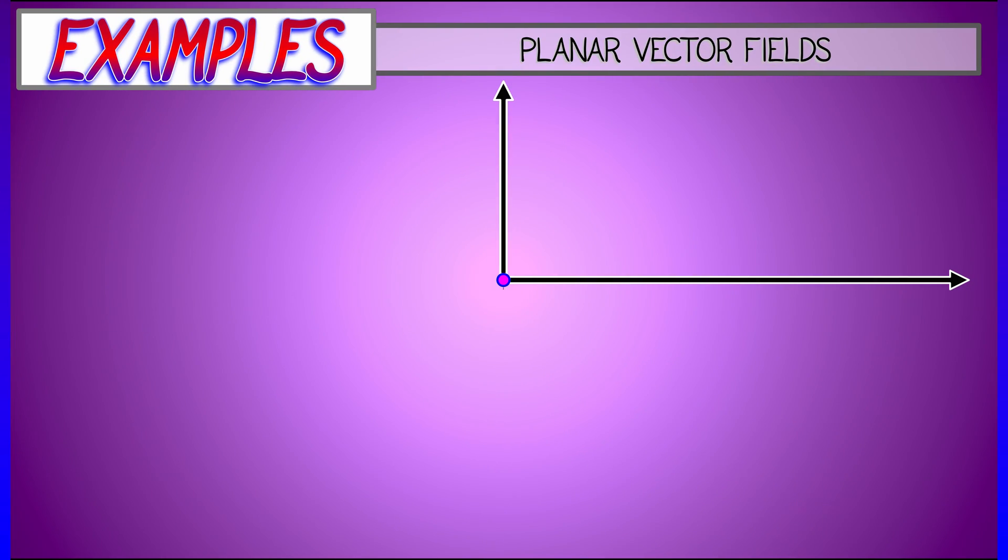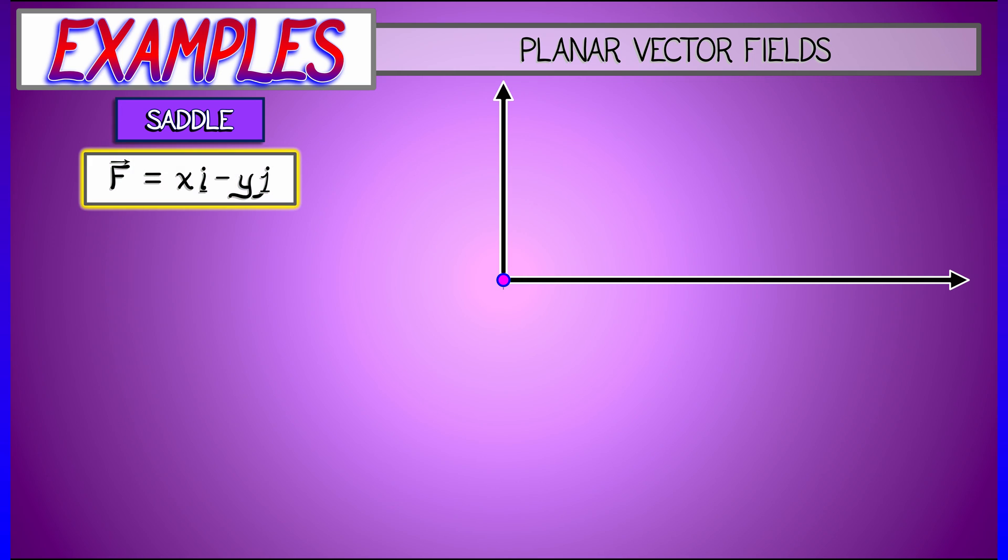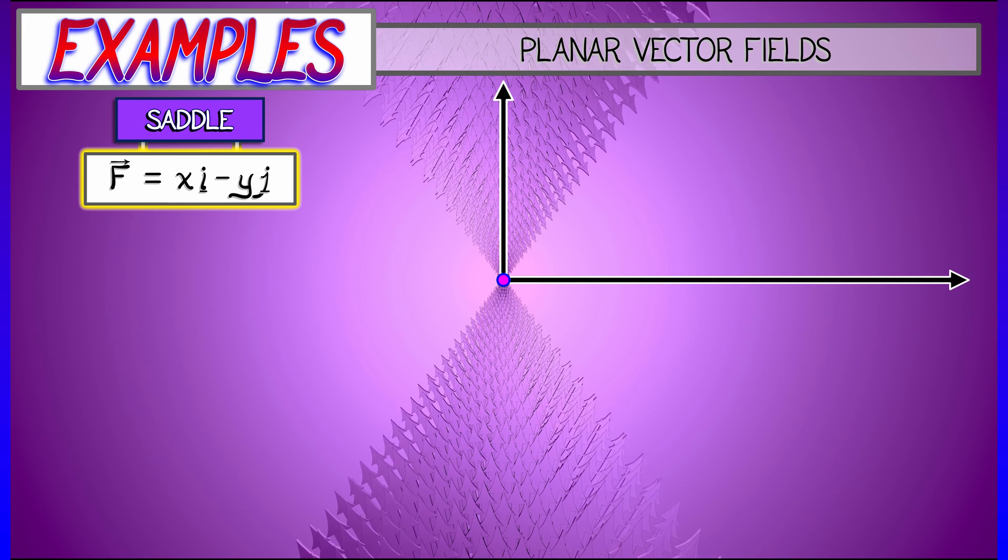Okay, here's a different example. This one's called a saddle. This is given by xi minus yj. Notice the difference in how the vector field is structured. You still have a vanishing point, an equilibrium at the origin. But now, along the x-axis, you are pointed purely in the horizontal direction.